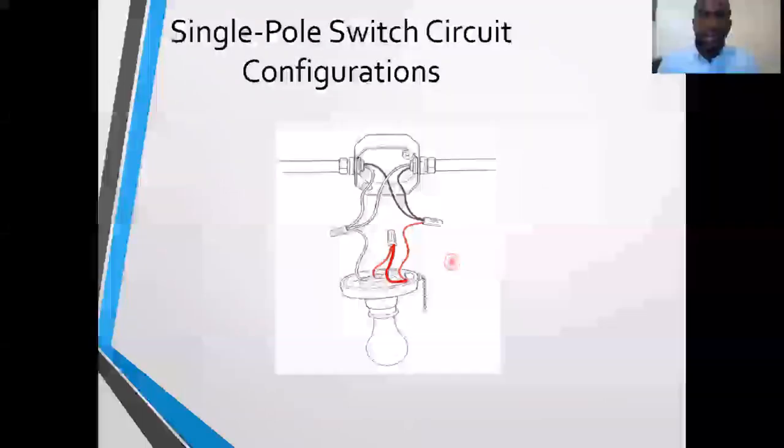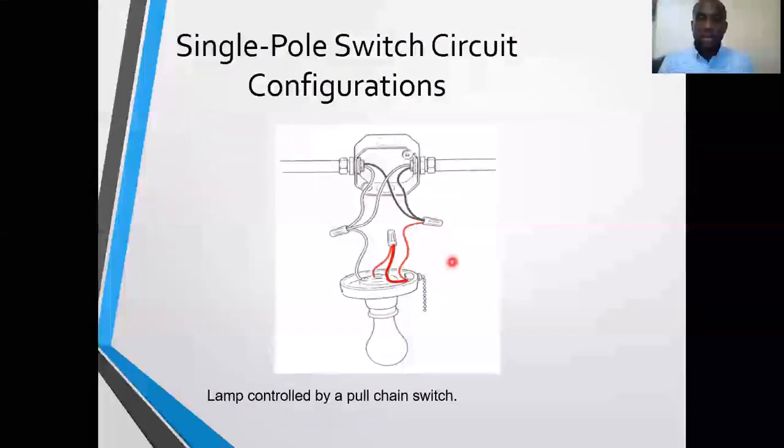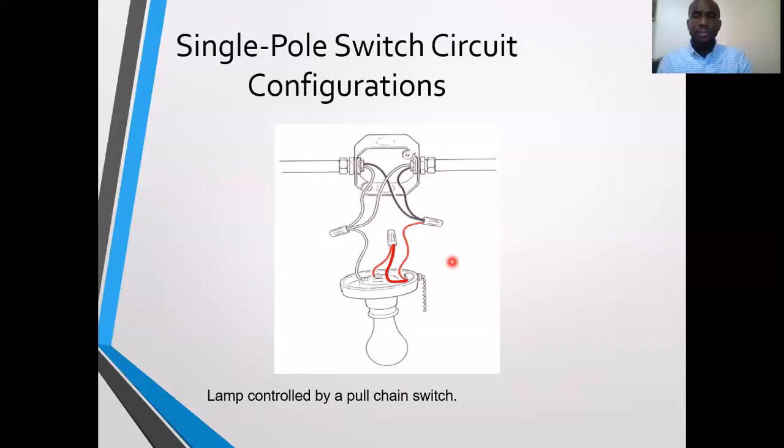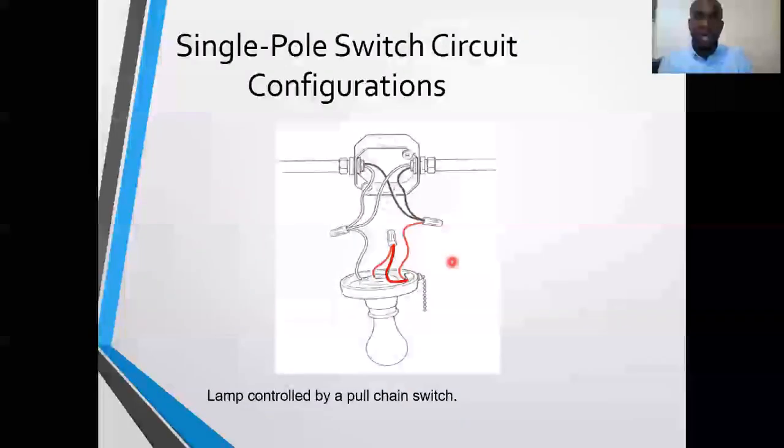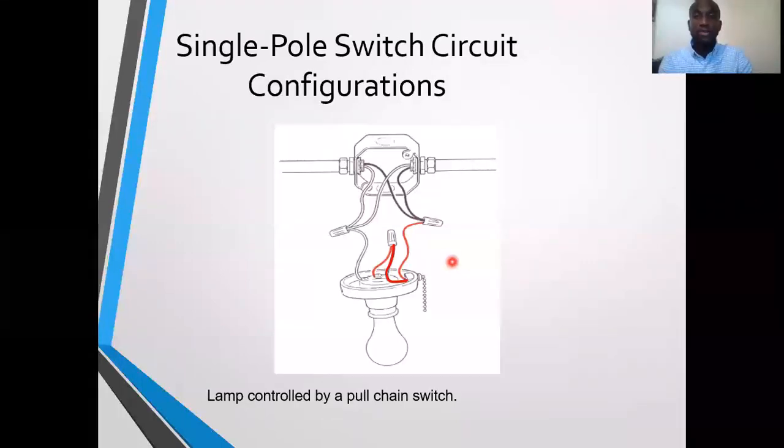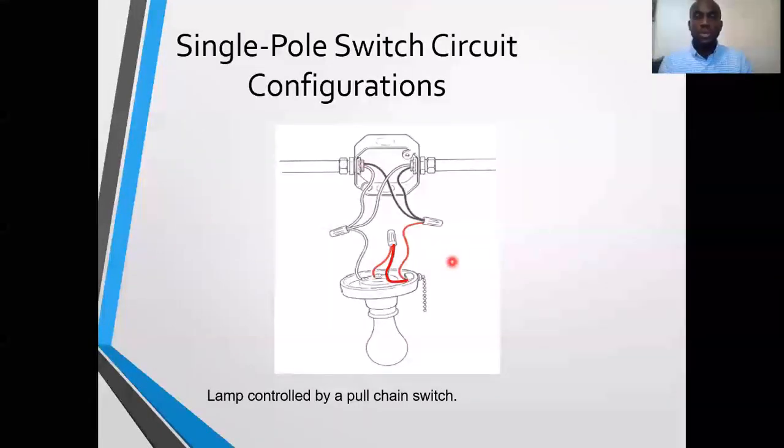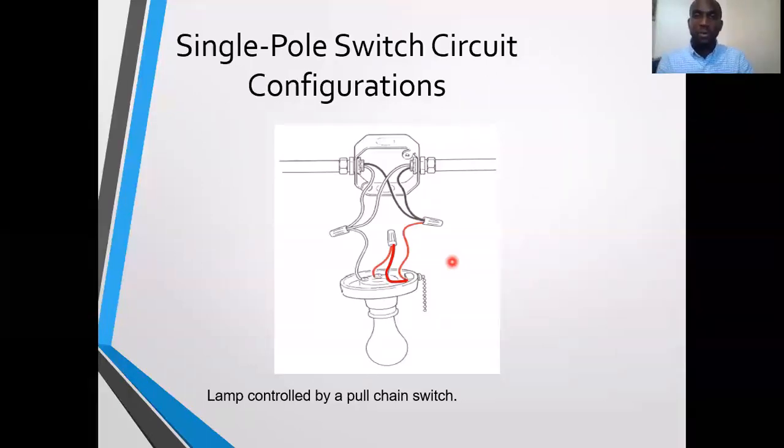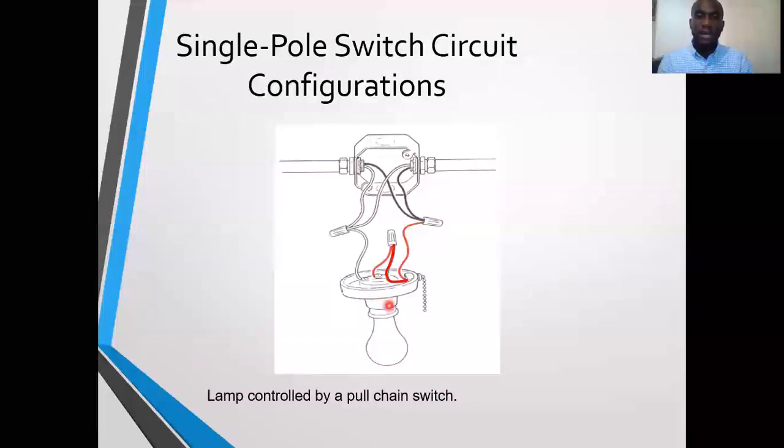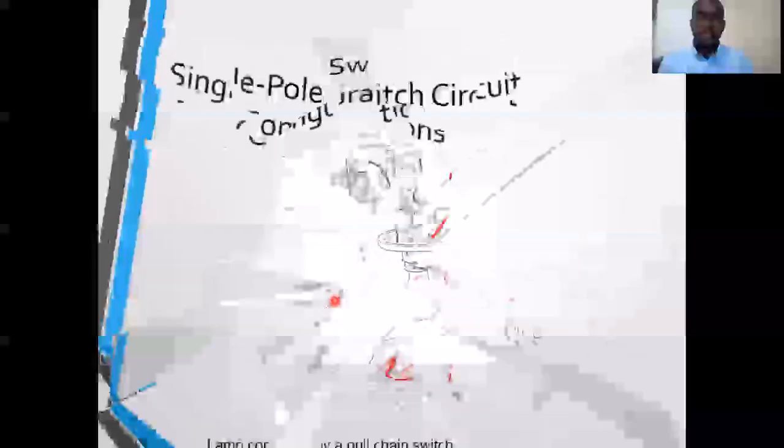And here is just a light with a pull chain independently controlled. This pull chain switching circuit would be popular in places like your closet. If you have a large closet or even a small enough closet but it's in a dark area, a pull chain switch would be used to control a light within that closet as opposed to trying to mount a switch on the wall if you don't want to. And that's a wiring diagram for that configuration.